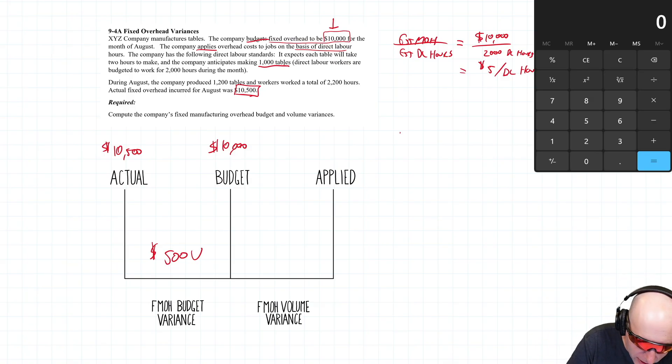So what did we do? We planned to make 1,000 tables, we actually made 1,200 tables. I can tell you this is a favorable variance. If you made more than you plan to, you got a favorable volume variance. If you made less than you plan to, you got an unfavorable volume variance.